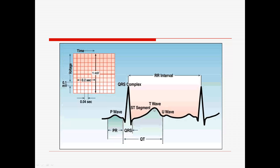The T wave represents the ventricles repolarizing — electrolytes rush back into the cardiac cells, getting ready for the next contraction. This produces a bump in the wave. The interval from the start of the QRS to the end of the T wave is called the QT interval. We also discussed that patients low in potassium will have a U wave — an extra dip after the T wave before the line returns to baseline. U waves are not normal.